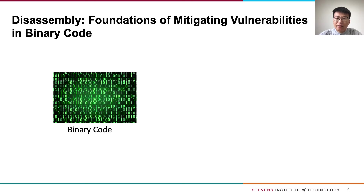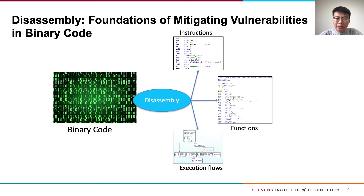In order to analyze binary code, we need to recover most structured information from the sequence of zero-one bits. That's what binary disassembly does. Binary disassembly is a task that translates binary code to assembly language, which is an inverse operation to that of an assembler. More specifically, binary disassemblers recover instructions, then mark the function entry at a specific location, and some disassemblers reconstruct the control flow graphs to better analyze the binary code. With the help of binary disassembly, we could apply various security measures to the binary code — that is to say, binary disassembly is the foundation of mitigating vulnerabilities in binary code.